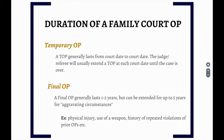We already know that orders of protection are not intended to last forever, so what are the different time restraints for OPs? You can have a temporary OP or a final OP. A temporary OP generally lasts from court date to court date, until the case is over. A final OP can be issued at the end of a case and generally lasts for one to two years. Where needed, however, a final OP can be extended for up to five years with evidence of aggravating circumstances, such as physical injury, use of a weapon, and a history of repeated violations of prior OPs.